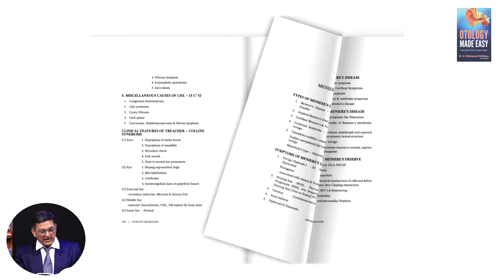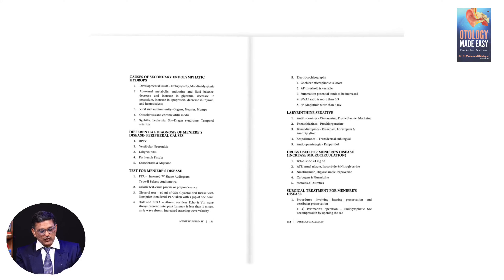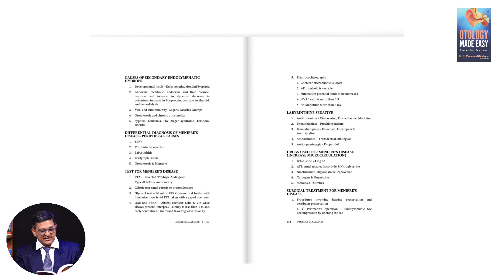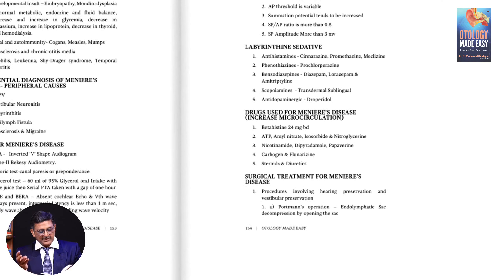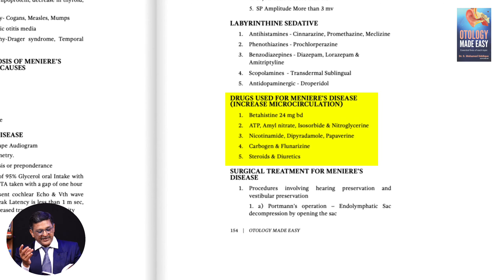If you take, for example, what are the drugs used for venous disease? The answer is pentoxifylline and amyl nitrate, nicotinamide and carbogen and steroids.